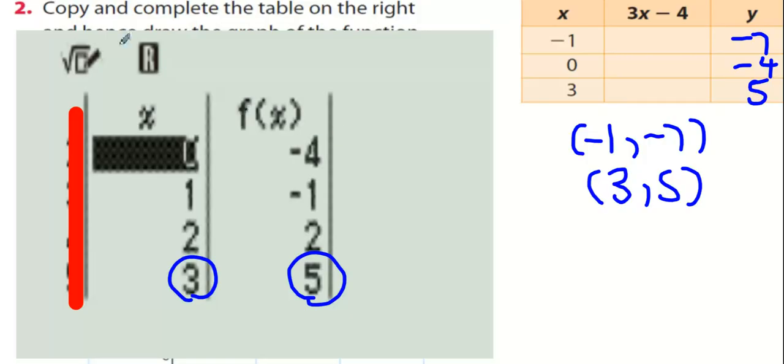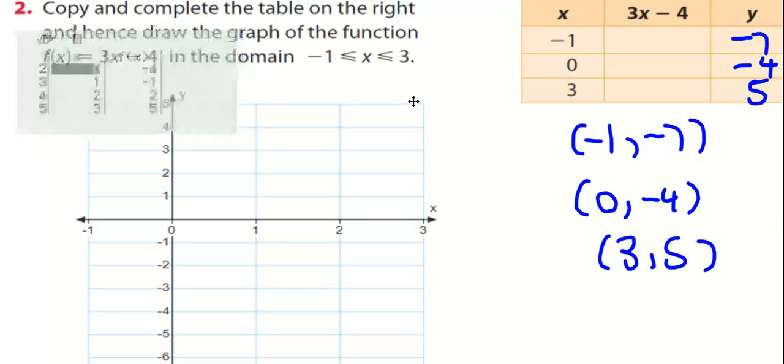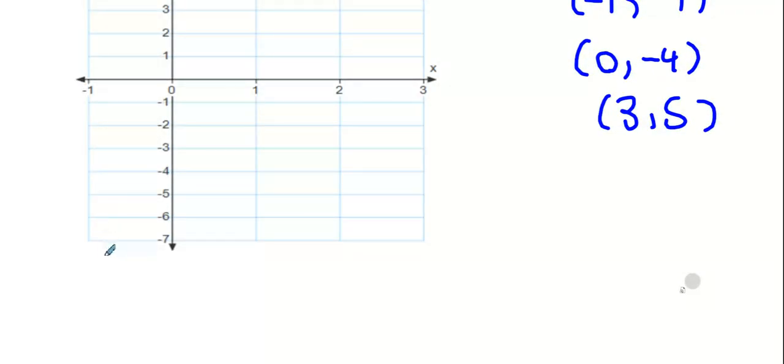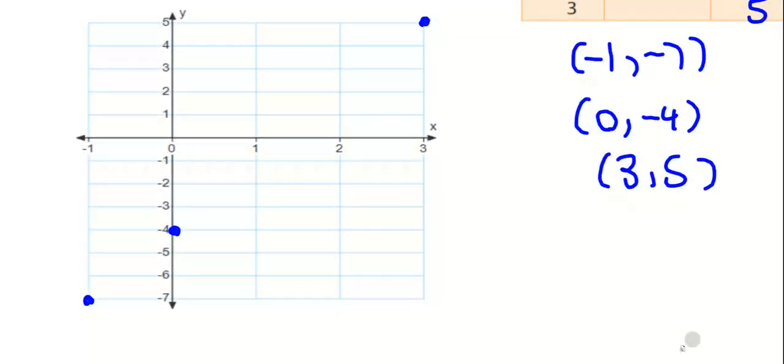Will everybody start drawing the points now? The first one is minus 1, minus 7. So I have to go across minus 1 all the way down to minus 7. Did everybody get that one? Then 0 and minus 4. Now you can draw the other points if you want, but the next one they want me to draw is 3, 5.